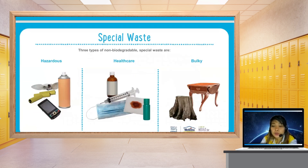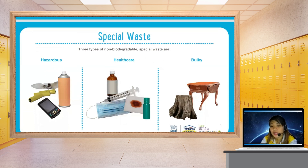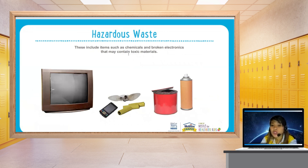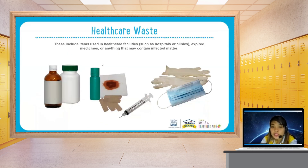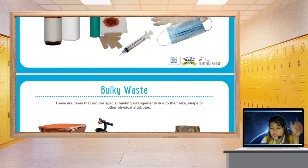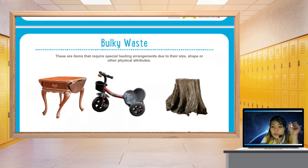Special waste types of non-biodegradable materials are hazardous. Hazardous waste includes items such as chemicals and broken electronics that may contain toxic materials, especially batteries, which are not good for health. Healthcare waste includes items from healthcare facilities such as hospitals or clinics, expired medicines, or anything that may contain infected matter — especially important now with COVID-19. Some special waste requires special handling arrangements due to size, like an old bicycle or old table.